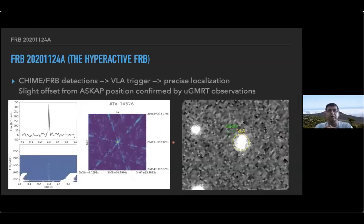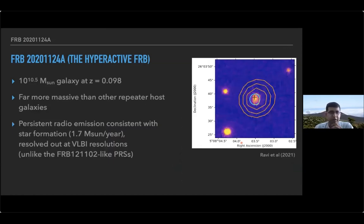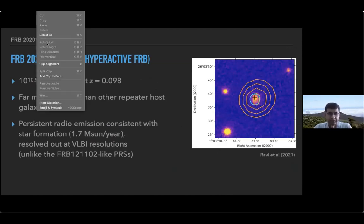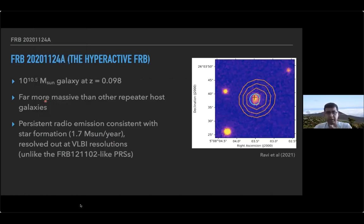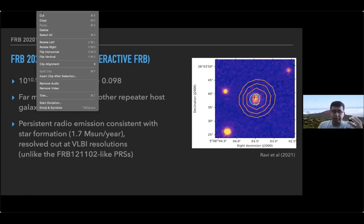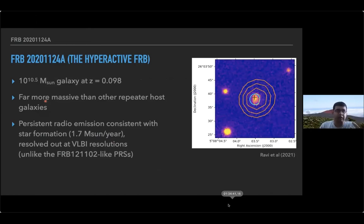The other FRB we localized was FRB 2011-24, which was quite hyperactive in CHIME. Once we had CHIME detections, we triggered the VLA to get a very precise localization. There is a slight offset from the ASKAP localization, later confirmed by GMRT and EVN as Benito showed. This FRB comes from an extremely massive galaxy — the most massive repeater host compared to any other repeater. The persistent radio emission from this galaxy is consistent with star formation occurring there — about two solar masses per year — and there is no point-like persistent radio source, unlike FRB 121102.